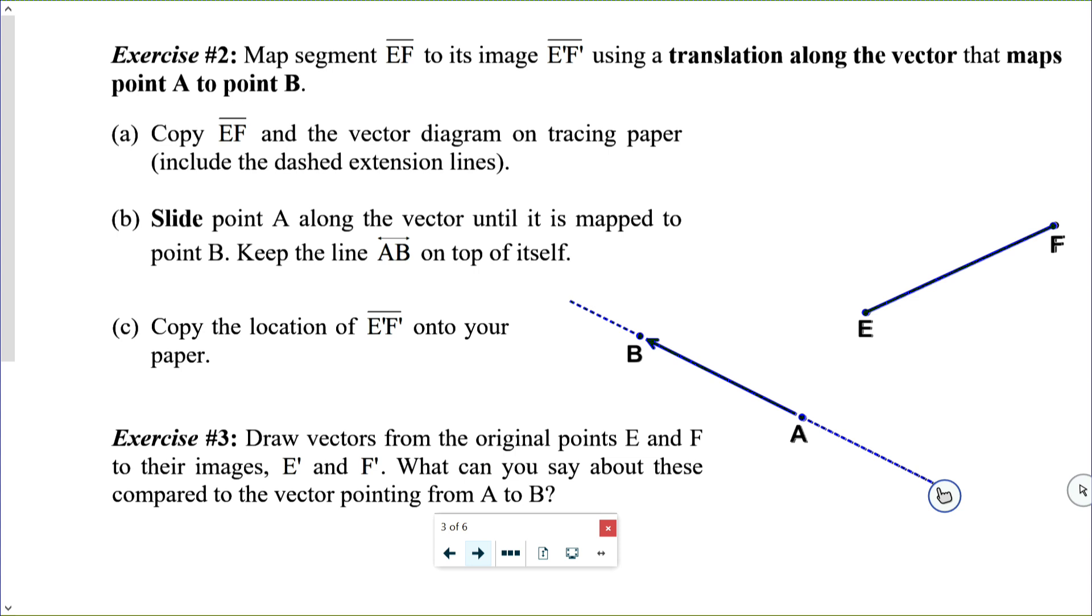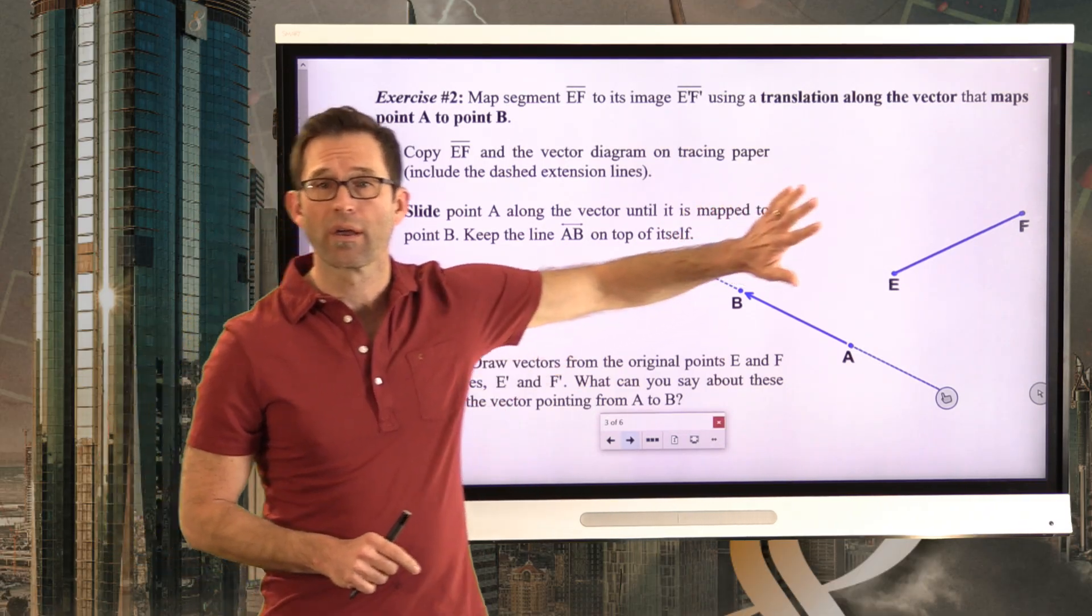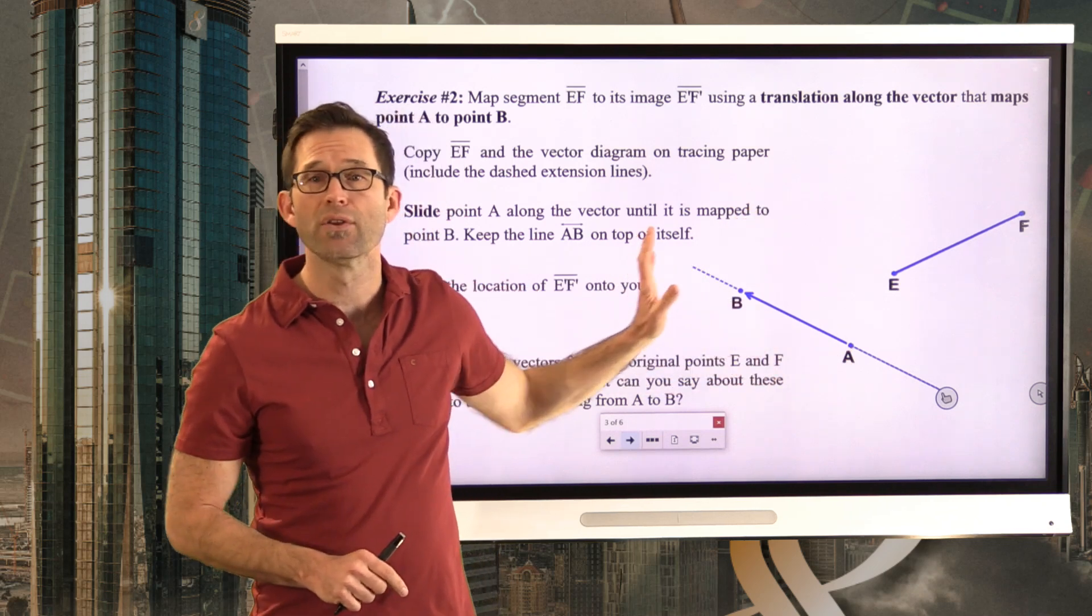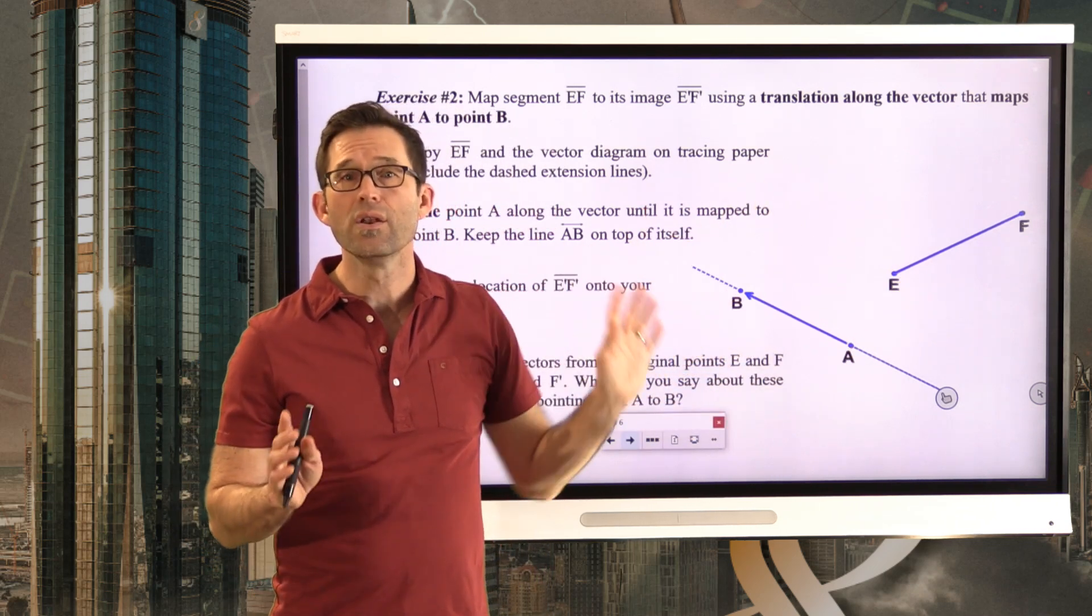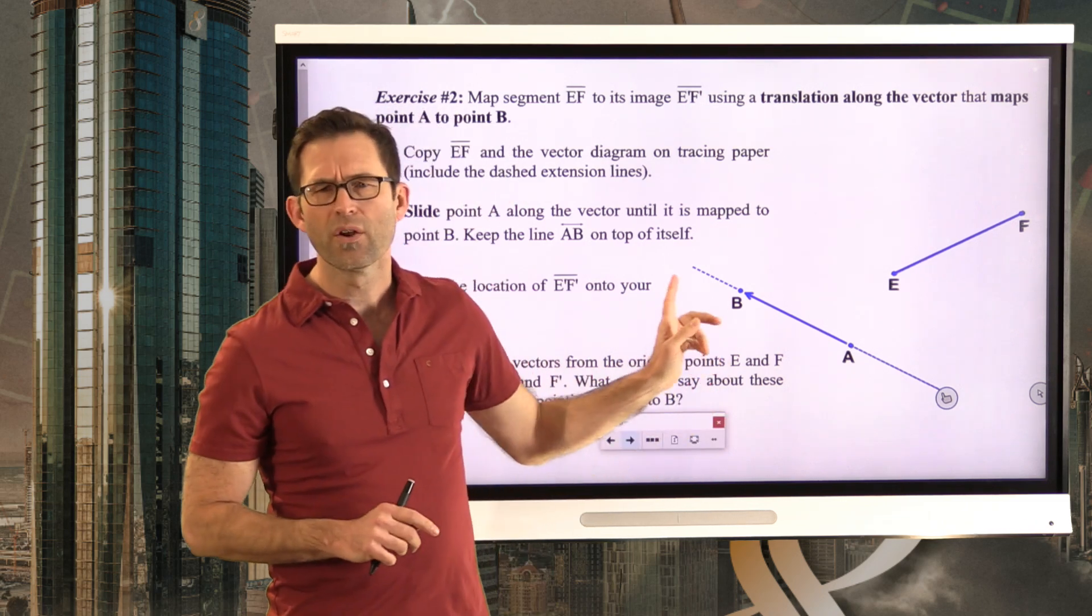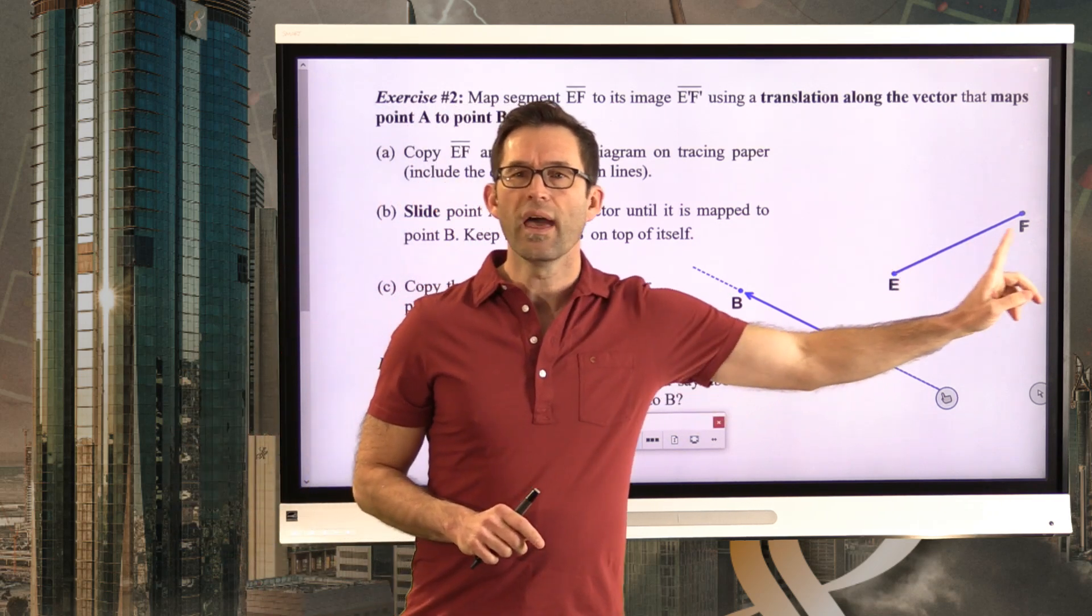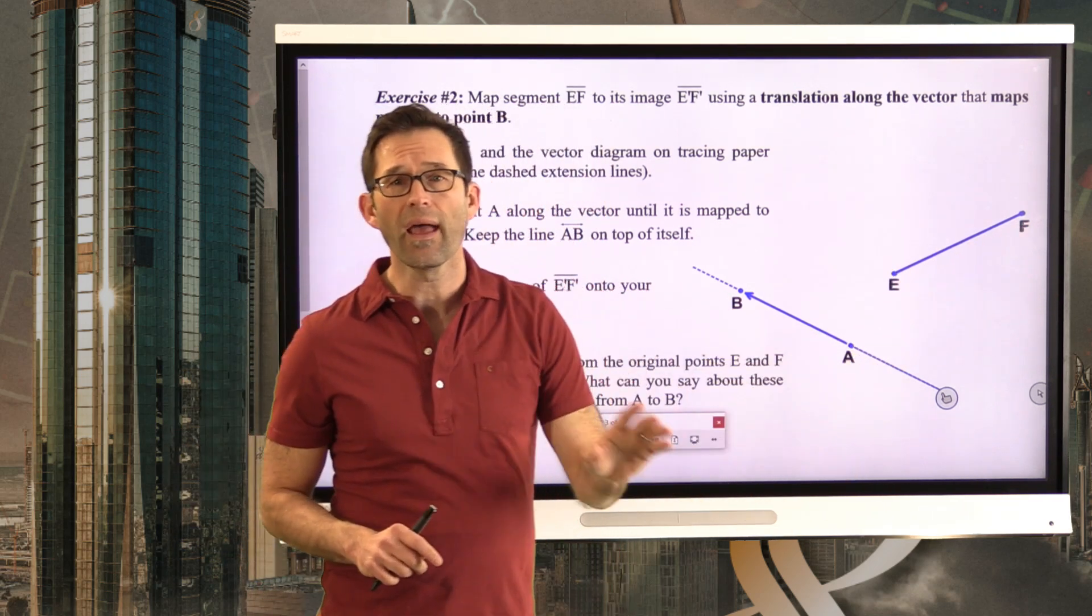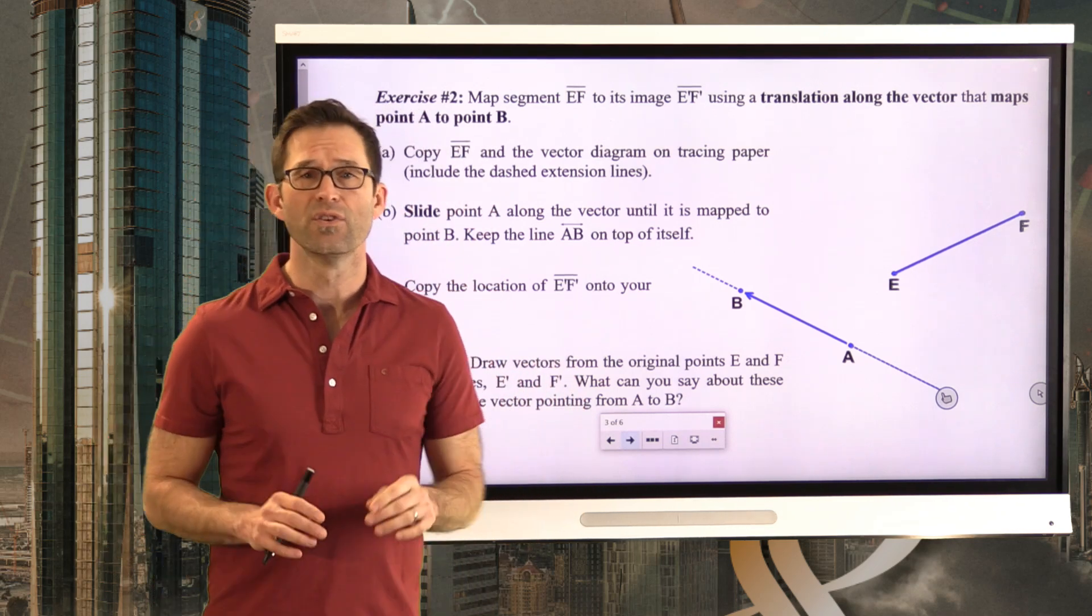Letter A, copy segment EF and the vector diagram on tracing paper, include the dashed extension lines. So you're going to want to take a piece of tracing paper right now and you're going to want to cover this entire diagram and trace this entire diagram. Little kind of note on translations. This is really helpful. You don't have to do this for the actual vector and the extension lines, but draw EF both on the front side and the back side of the tracing paper and I'll explain why in just a moment. Take a minute to do that.